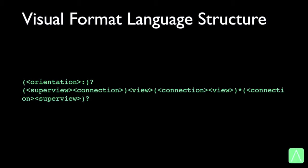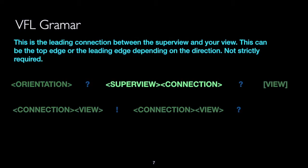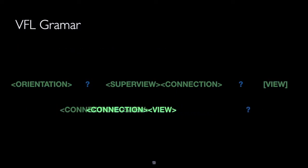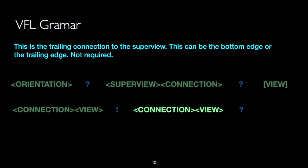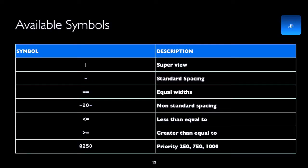This is how the visual format language structure looks. First, we have the orientation — the direction in which we are describing the constraints. Then we have the superview, along with the connection to the superview. Next, we mention the first view in the sequence. We may or may not have a connection to another view. Lastly, we have a trailing connection to the superview, and some components are not required. Here are some available symbols that we will look at through examples momentarily.